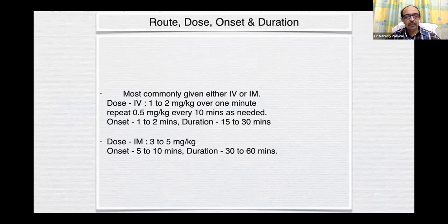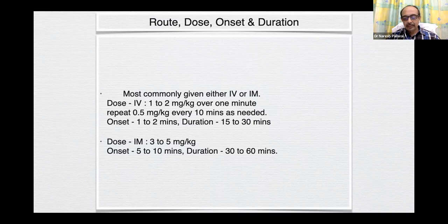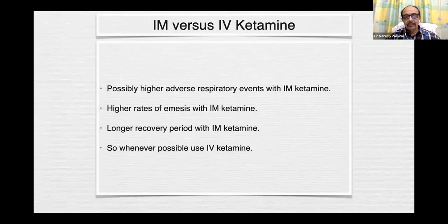Routes of administration for ketamine: most commonly given by intravenous or intramuscular route. Intravenous loading dose is 1 to 2 mg per kg over 1 minute; repeat 0.5 mg per kg every 10 minutes as needed. Onset is within 1 to 2 minutes and duration is 15 to 30 minutes. Intramuscular loading can be 3 to 5 mg per kg or more. Onset 5 to 10 minutes, duration 30 to 60 minutes. There are possibly higher adverse respiratory events, higher rates of emesis, and longer recovery with intramuscular ketamine, so intravenous route is preferable when possible.